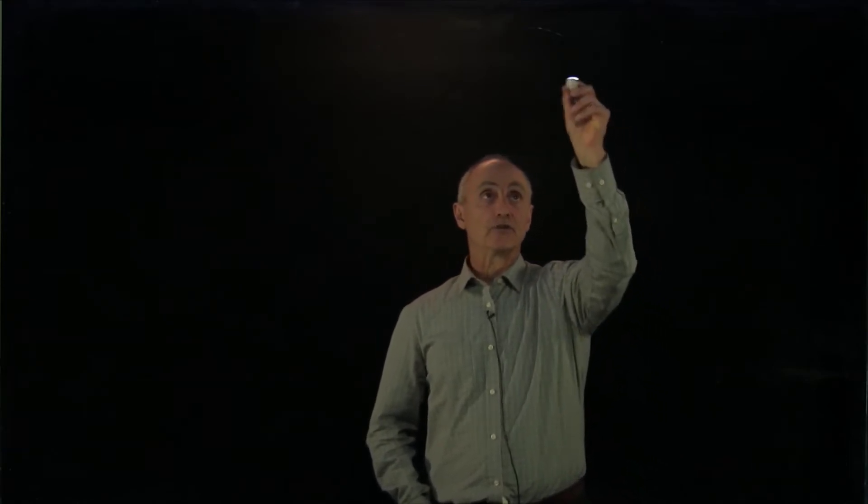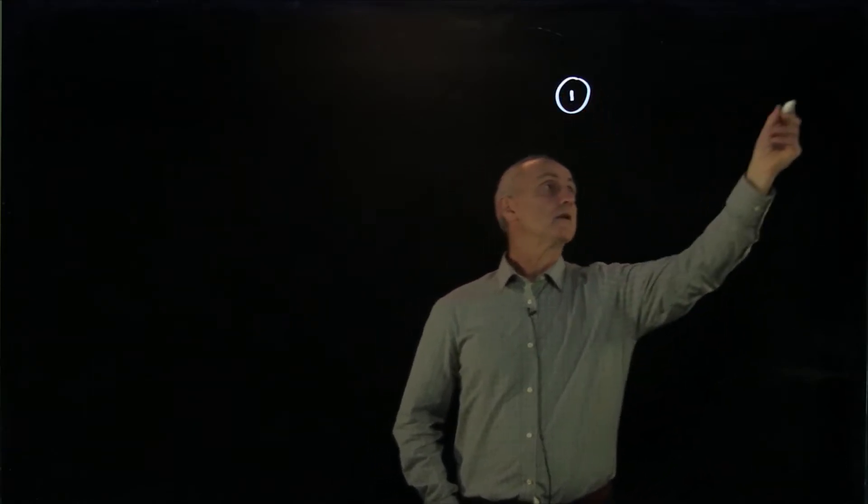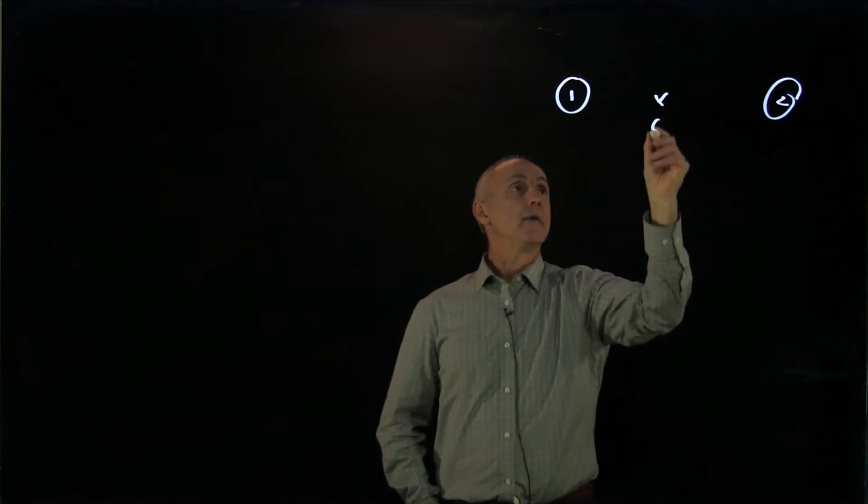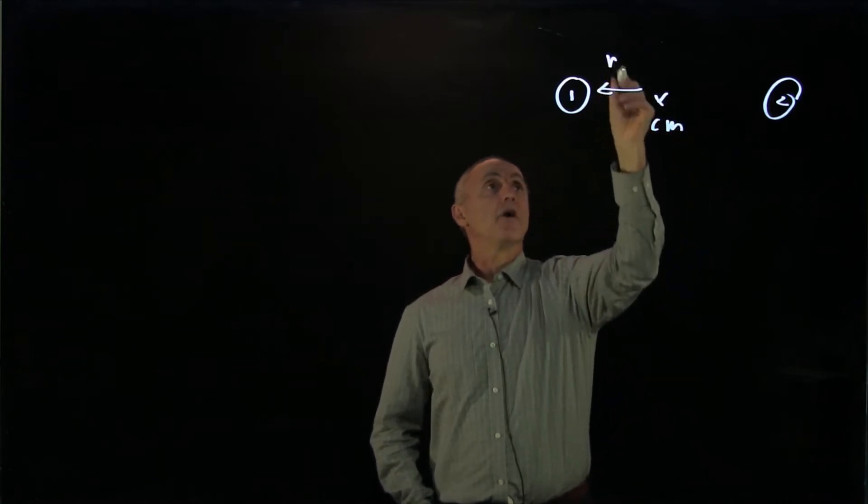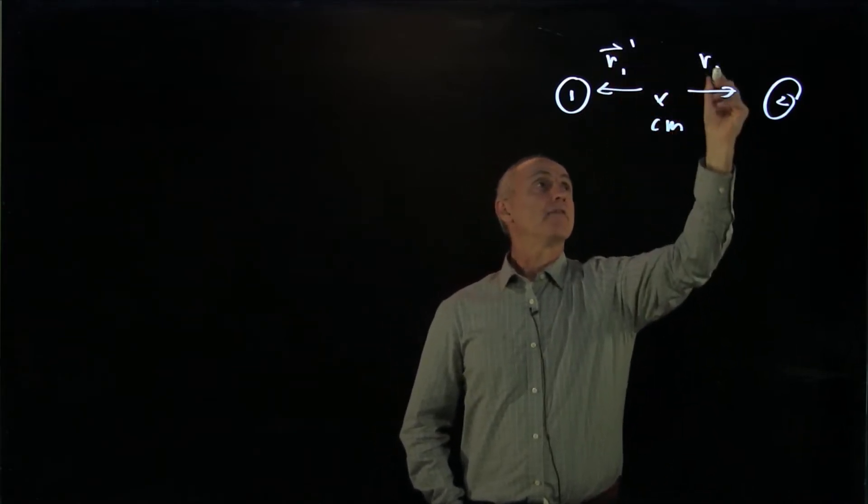Let's examine the velocities of an object in the center of mass reference frame. So we have object 1 and object 2, and we have cm, and we have r1 prime, and we have r2 prime.